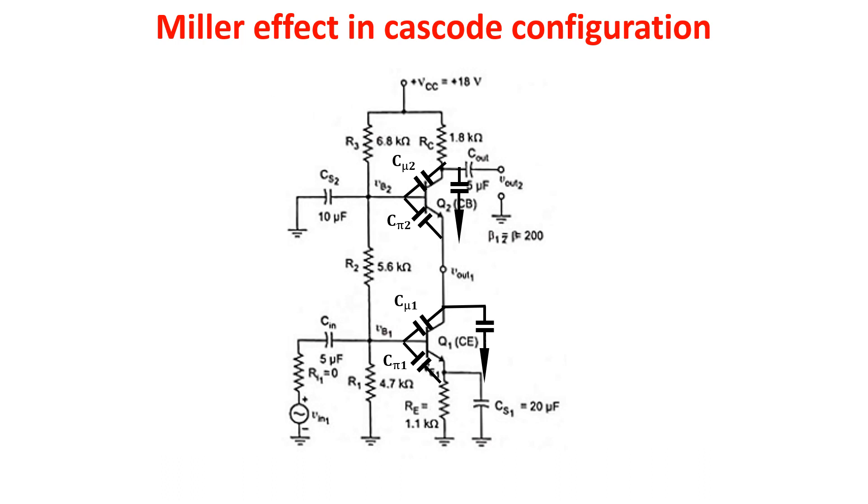We know that the input capacitance because of the Miller effect is this one here, where Rout1 is the output resistance of the common emitter. So the resistance seen from here which is about 1 over GM2. So the input capacitance becomes this, and this if GM1 is similar to GM2.